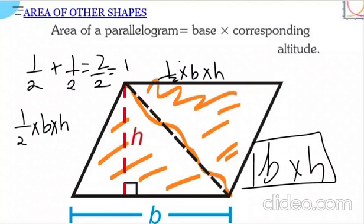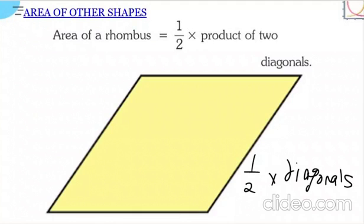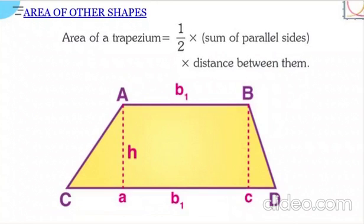Next is the rhombus. Its area is ½ × the product of its diagonals. Diagonals are the lines connecting opposite vertices — there are always two in a rhombus. If one diagonal is x and the other is y, then area equals ½ × x × y.